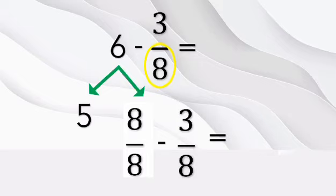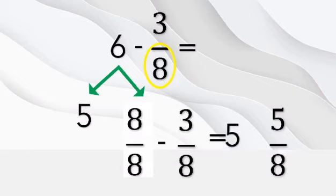So let us start with the numerator. 8 minus 3, we have 5. And let us just copy the denominator. How about the remaining whole number? We are just going to copy the whole number for us to have the answer 5 and 5/8.